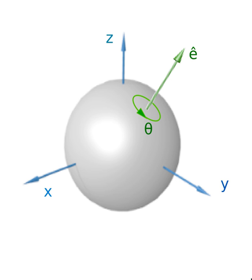Unit quaternions, or versors, are in some ways the least intuitive representation of three-dimensional rotations. They are not the three-dimensional instance of a general approach. They are more compact than matrices and easier to work with than all other methods, so are often preferred in real-world applications. A versor consists of four real numbers, constrained so the norm of the quaternion is 1. This constraint limits the degrees of freedom of the quaternion to 3, as required.